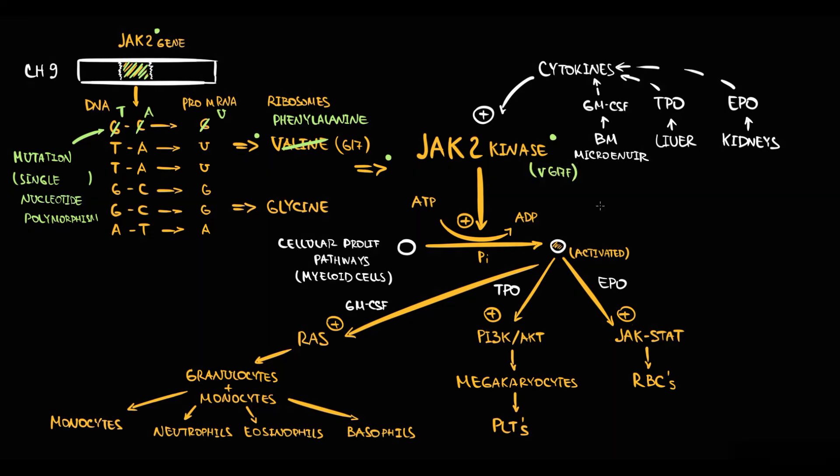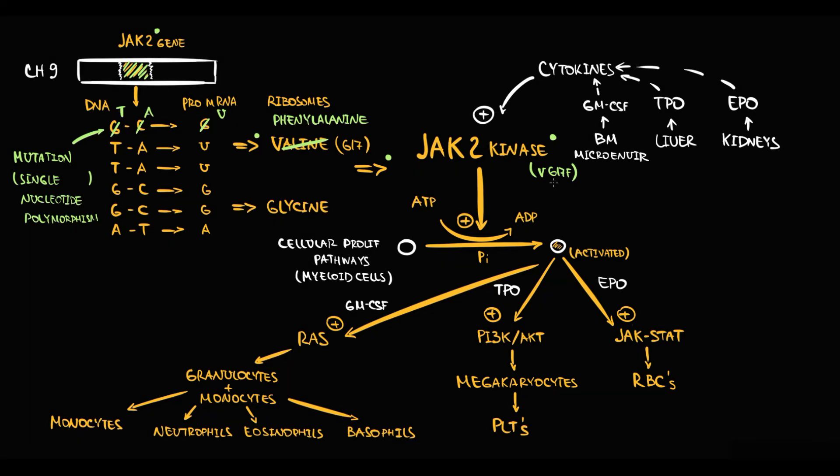Now why is this mutation so dangerous? Recall that in normal condition, JAK2 kinase is active only when it receives signal from the cytokines. But this mutation causes persistent activation of JAK2 kinase. Now the state of JAK2 kinase is not determined by the cytokines. With this mutation, JAK2 kinase becomes constantly active and basically begins to function on its own.